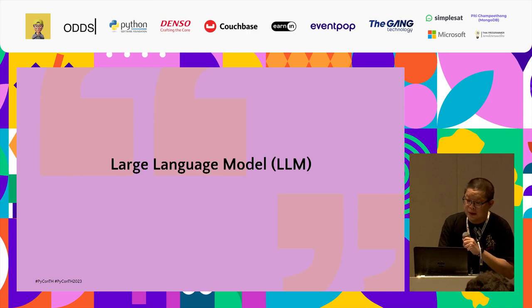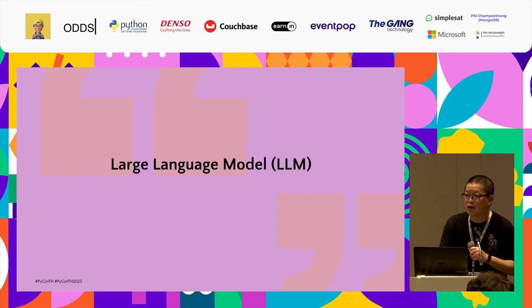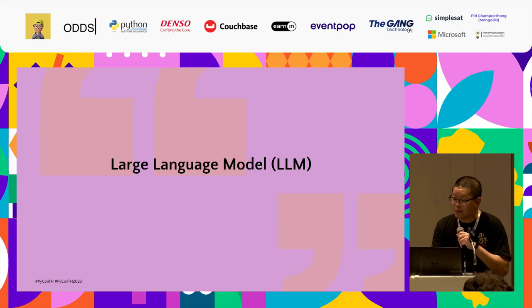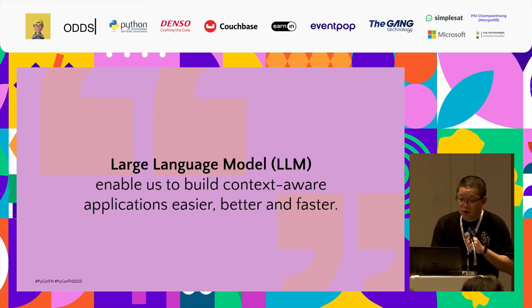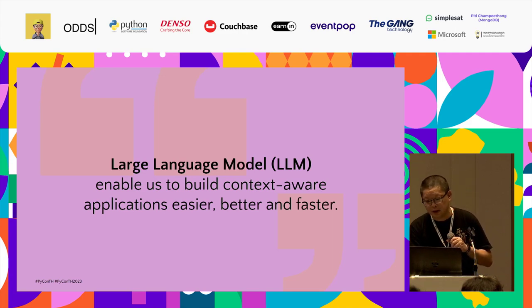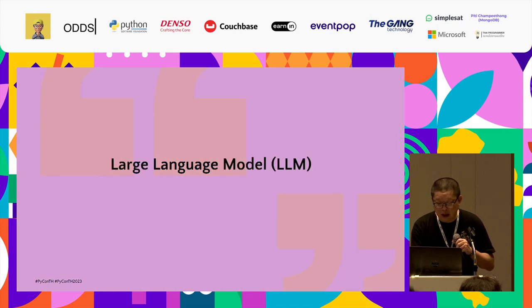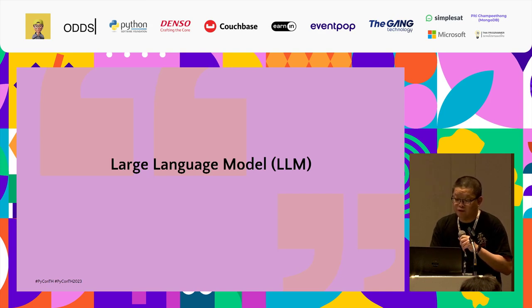Large language model, or LLM, is a model trained on an enormous amount of data in many languages, especially English. The way this kind of model was trained makes them capable to understand language, generate responses, translate, and summarize text. For developing applications, it enables us to build context-aware applications easier, better, and faster. Applications which used to be developed for months may now be completed in weeks or days. And with LangChain, it's even much more convenient.